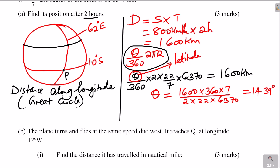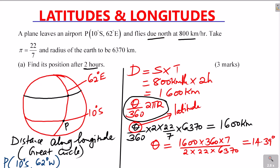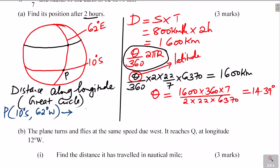Now with the latitude difference, we know position P is at 10 degrees south, 62 degrees east. The plane moves due north to a new position at x degrees north, on the same longitude 62 degrees east. Since P is 10 degrees south and it's moving northward, the latitude difference is 10 + x = 14.39.